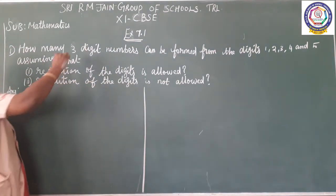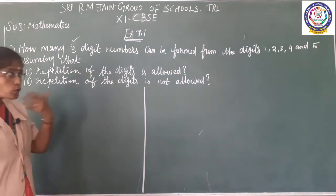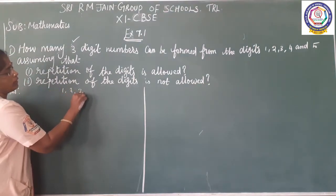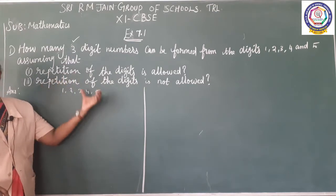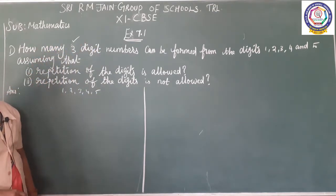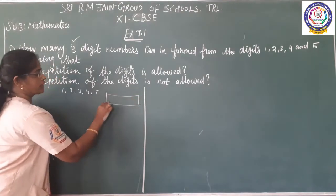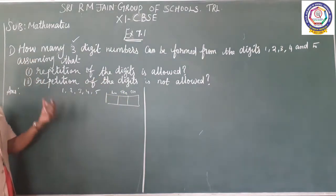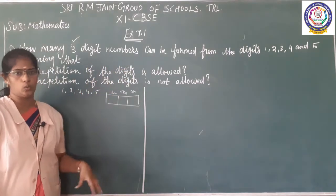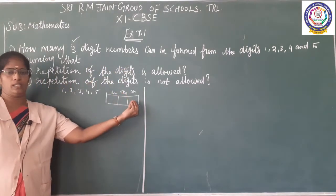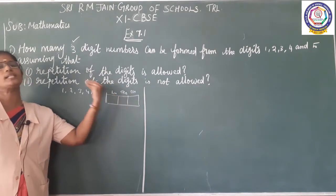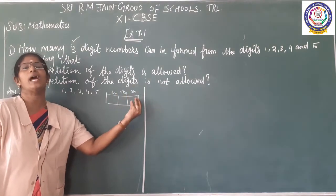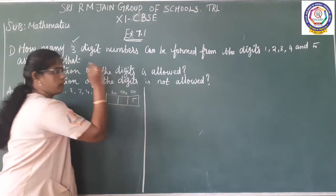Here, what the question asks: how many 3-digit numbers we have to make? The given digits are 1, 2, 3, 4, and 5. A 3-digit number has units, tens, and hundreds places. For the first subdivision, repetition is allowed. So if I use any of the 5 digits in the units place, I can use the same digits in the tens place and hundreds place also. So I can arrange in 5 ways in the units place.